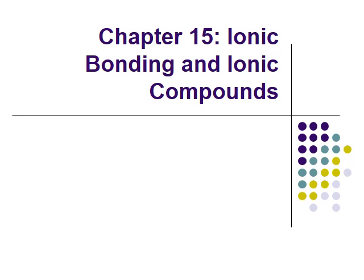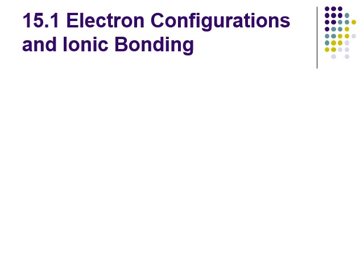In this video we're going to start looking at chapters 15 and 16 together. Chapter 15 is over ionic bonding, chapter 16 is over covalent. We're also going to be looking at metallic bonding. As we go through these chapters, what you really want to focus on is what is each type of bond, how is it occurring, and how is that giving us the properties for these compounds.